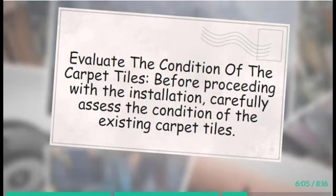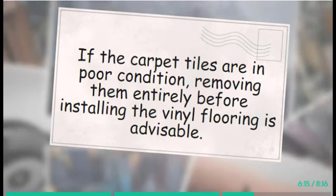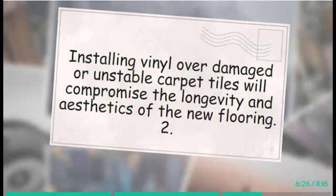Tip 1: Evaluate the condition of the carpet tiles. Before proceeding with the installation, carefully assess the condition of the existing carpet tiles. Ensure they are firmly in place, with no loose or damaged tiles. If the carpet tiles are in poor condition, removing them entirely before installing the vinyl flooring is advisable. Installing vinyl over damaged or unstable carpet tiles will compromise the longevity and aesthetics of the new flooring.